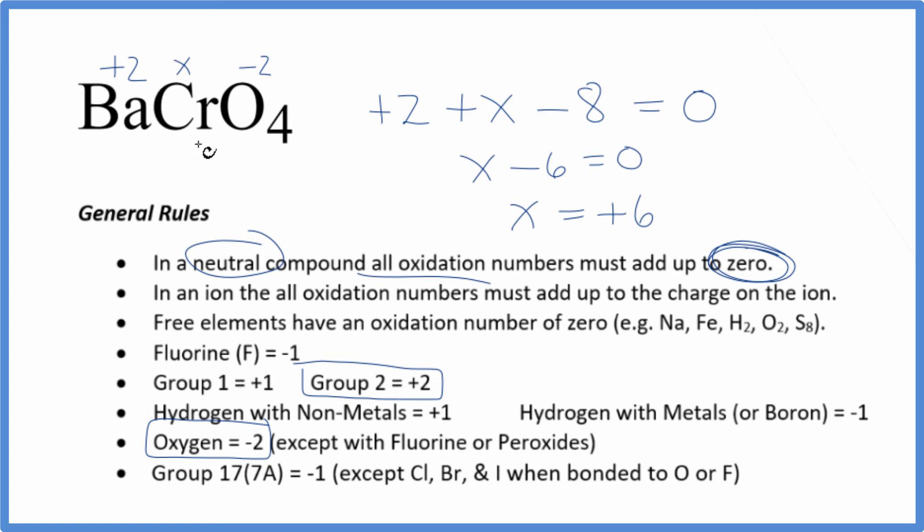So the oxidation number on the chromium here in BaCrO4, barium chromate, that is a positive 6. And if we add up all the oxidation numbers, 4 times minus 2, that's minus 8. 6 plus 2, that's plus 8. So this all adds up to zero because it's a neutral compound.